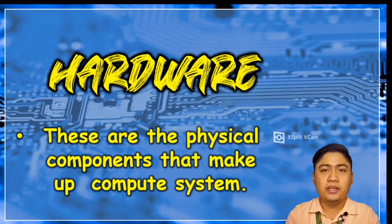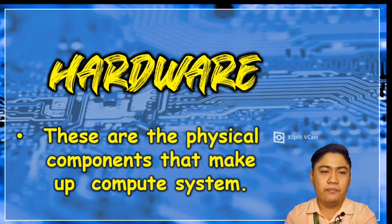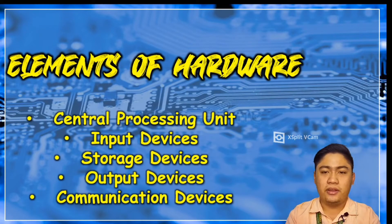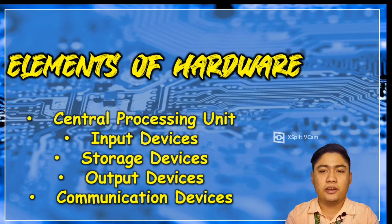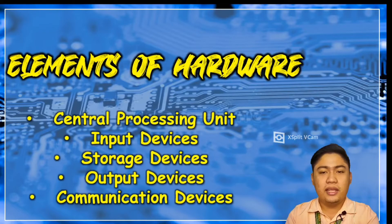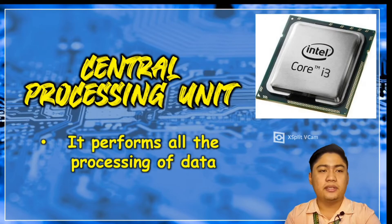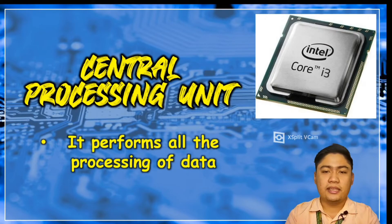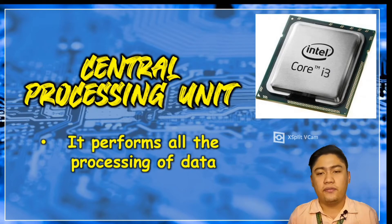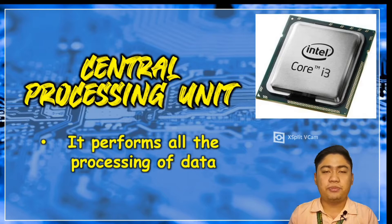Hardware are the tangible parts of the system. We have five elements of hardware: the central processing unit, the input devices, the storage devices, the output devices, and the communication devices. The central processing unit, or CPU, performs all the processing of data. It is the computer's processing, control, and storage circuitry.